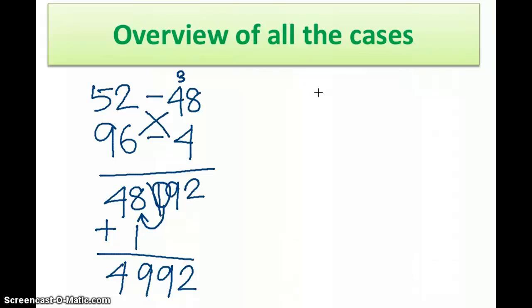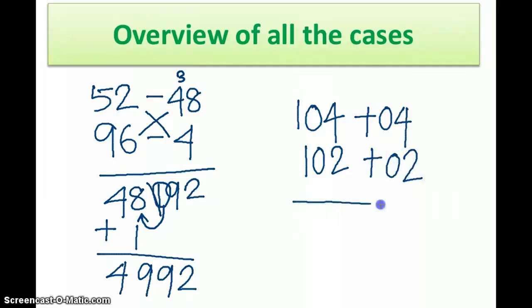Here comes the last case where when we multiply the right-hand side numbers, it is becoming less than two digits. For example, I will take a case of 104 and 102. This is 4 more and this is 2 more. We have to multiply the right-hand side: 4 into 2 gives me 8. But here we will write 08 because our base is 100 and 100 has two zeros. That means on the right side I always want two digits. If it is less than two digits, put a zero on the left side. If it is more than two digits, then take a carry forward.